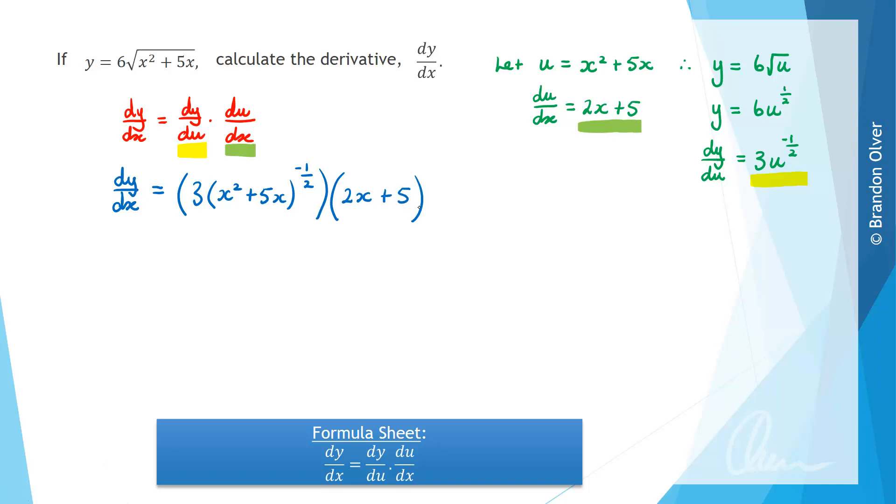So that's a perfectly acceptable way of writing out the derivative, however we can express this in a slightly different way. So we could have dy/dx equals, and the 3 can be multiplied by the 2x plus 5, to give 3 times 2x plus 5, and then we can divide that by,